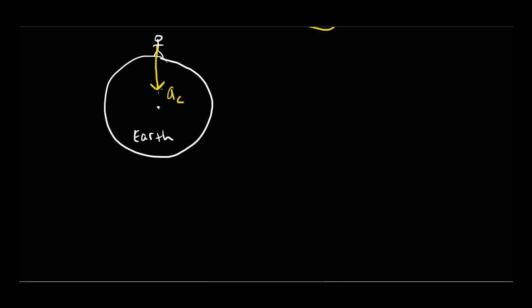If we imagine shutting off Earth's gravity, we would fly off the surface in a straight line, because objects in motion want to remain in motion in a straight line. It's Earth's gravity pulling us toward the center that keeps us moving in a circle and produces centripetal acceleration. Without gravity, there'd be no centripetal acceleration and we'd go off in a straight line.